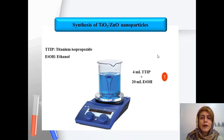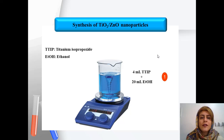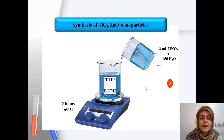In this process, two types of precursors are used. First, the solution of the first precursor is produced. For this purpose, four milliliters of TTIP, which is titanium isopropoxide, is added to 20 milliliters of ethanol. This solution is stirred for about 30 minutes.